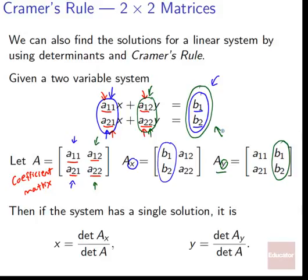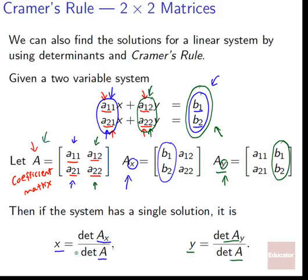If the system has a single solution, then x equals the determinant of Ax over the determinant of A, and y equals the determinant of Ay over the determinant of A. So each variable equals the determinant of its special matrix divided by the determinant of the general coefficient matrix.